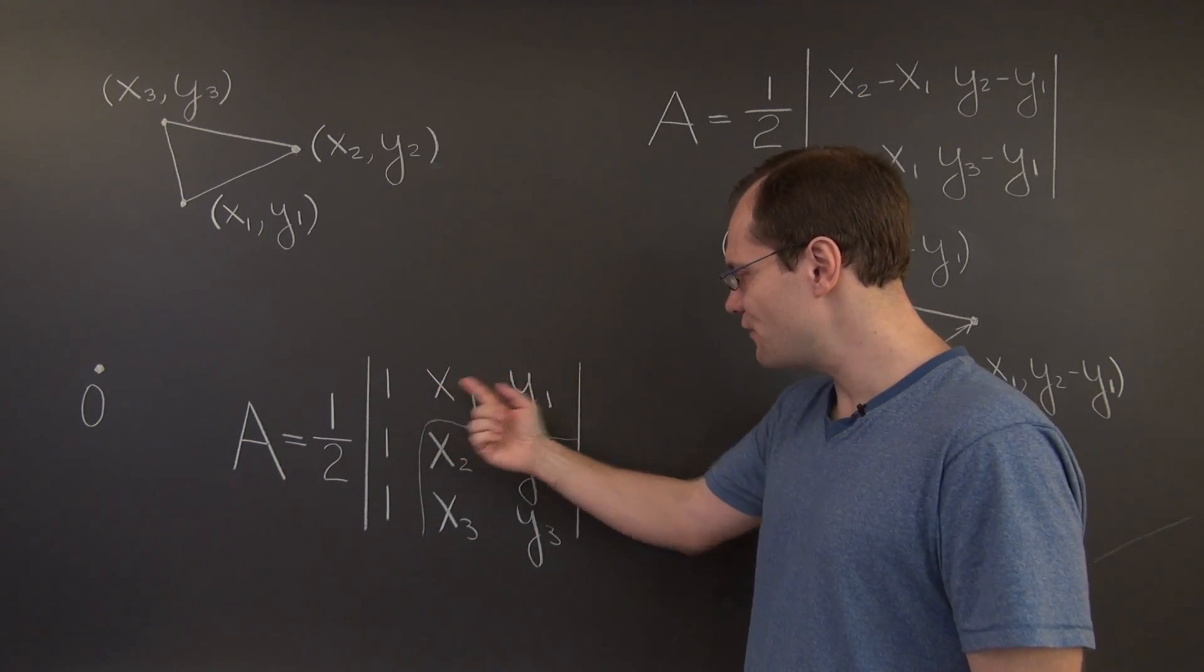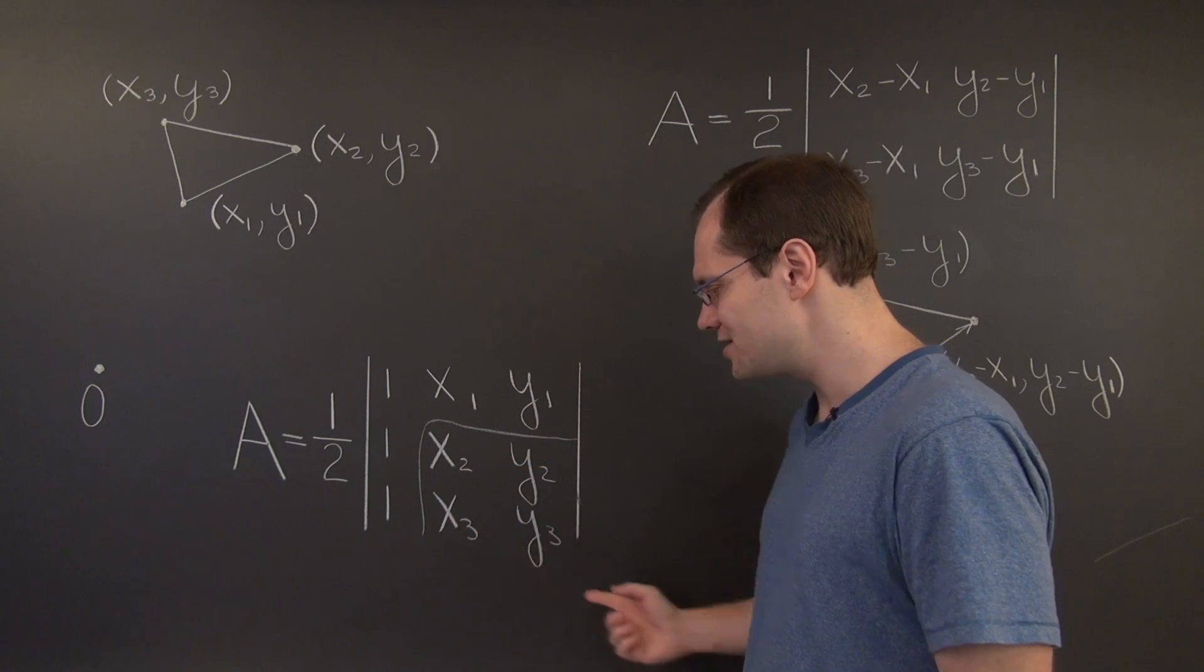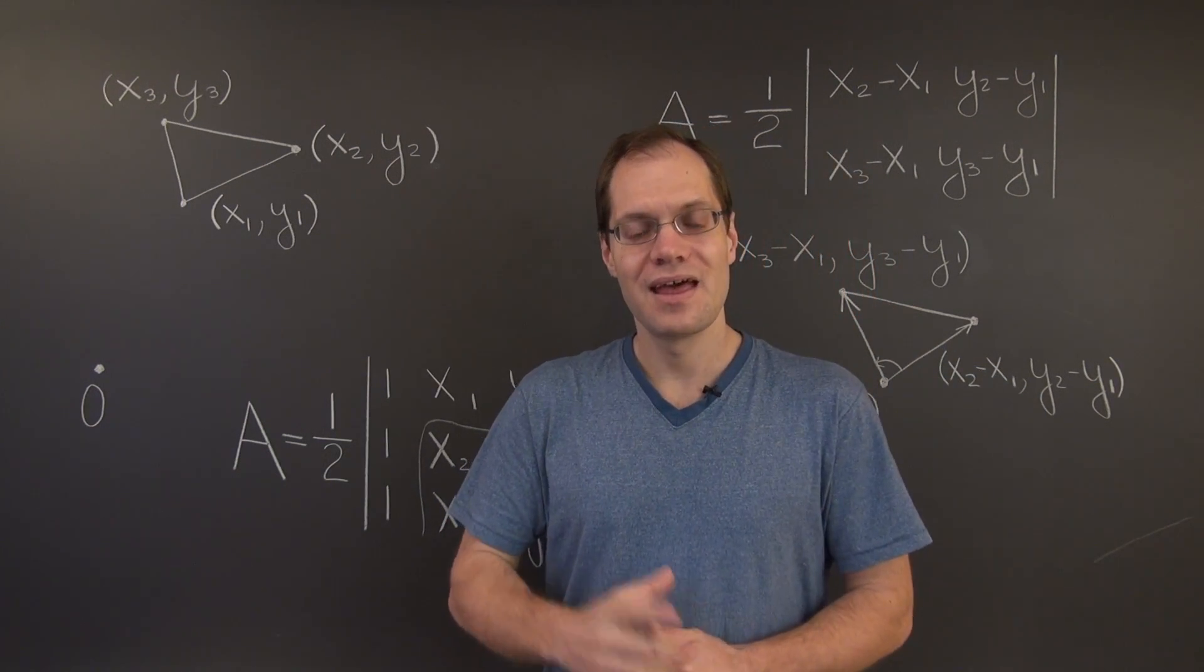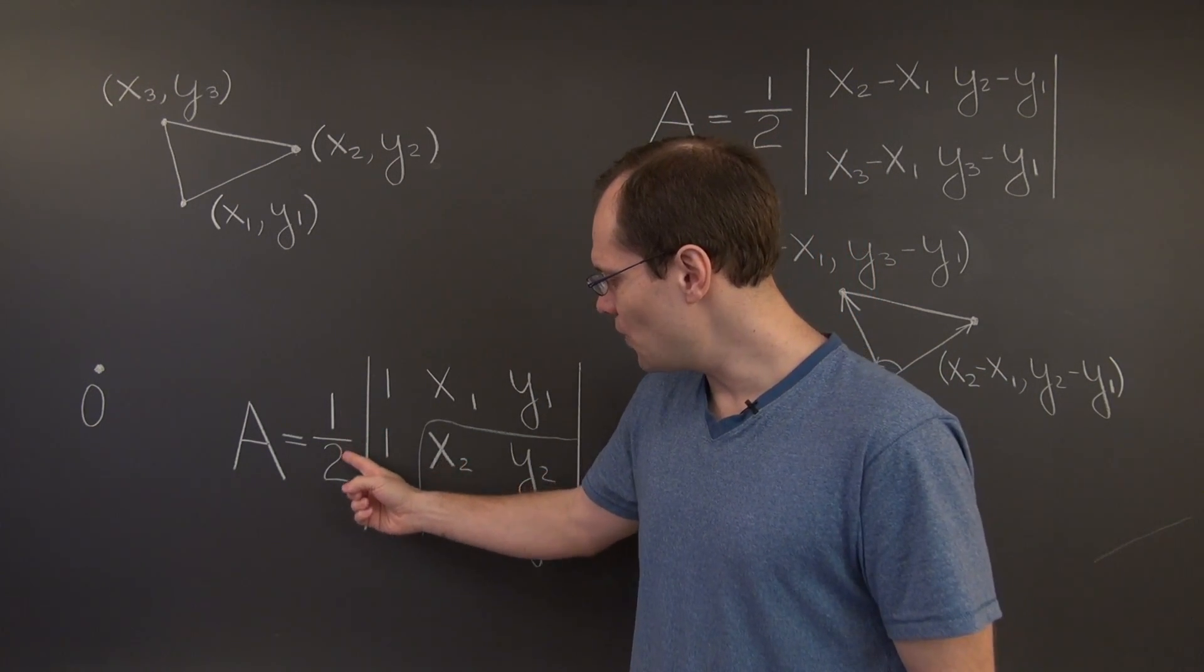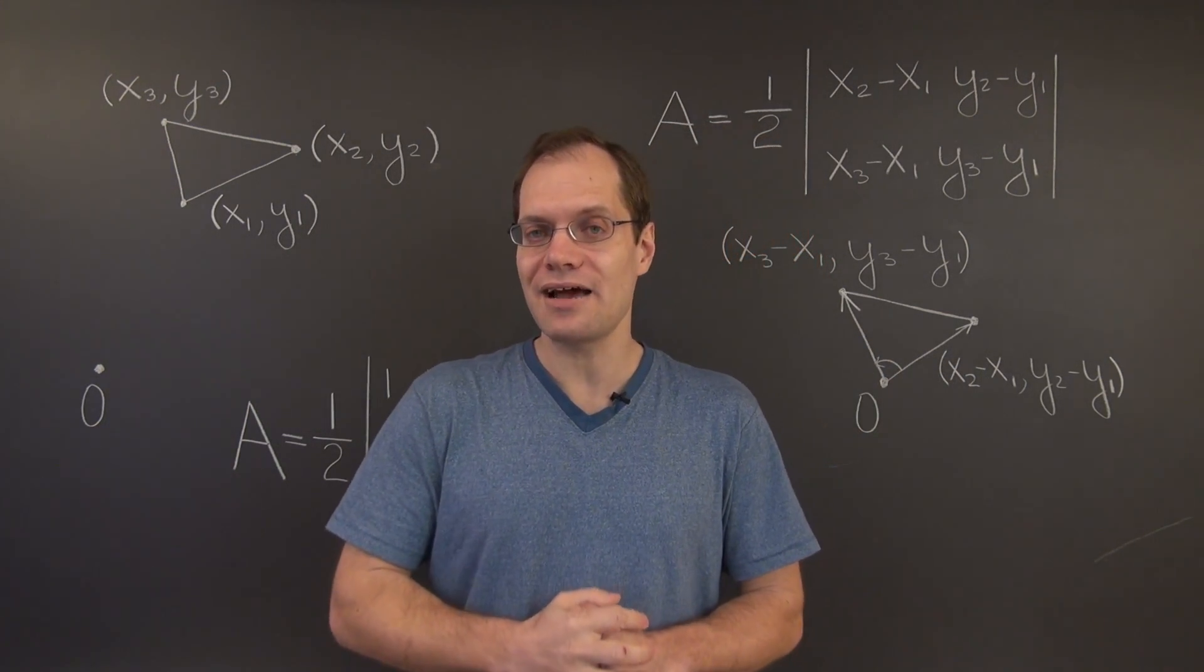In which case instead of this 3 by 3 matrix you would write down a 4 by 4 matrix with ones in the first column. And the three, and excuse me, the four sets of coordinates as rows.